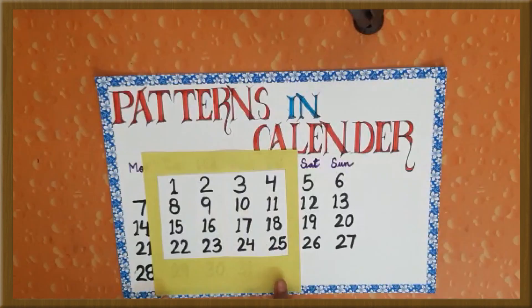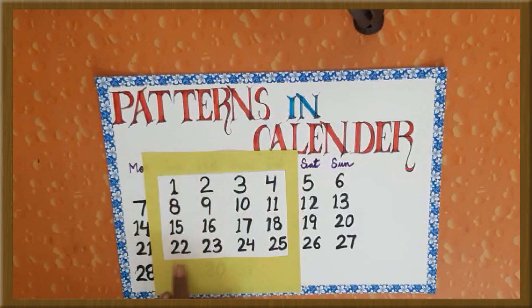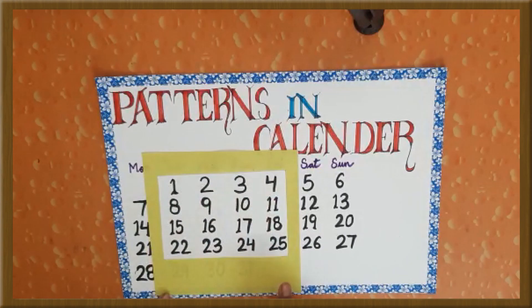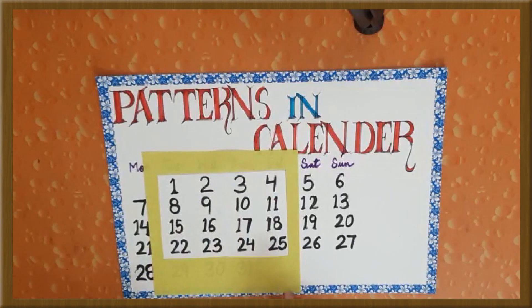Now let's take a bigger square — this is a 4 by 4 matrix. Let's solve it and find patterns in this magic square.